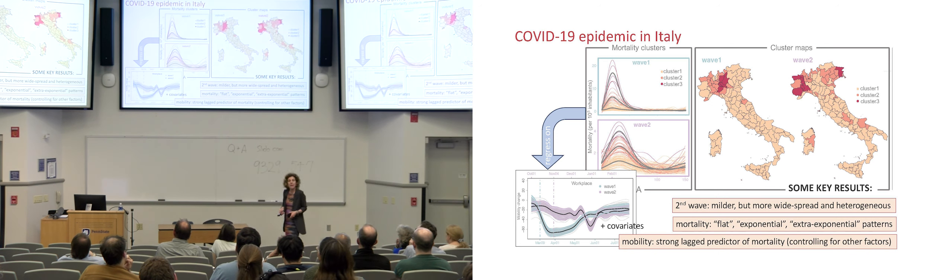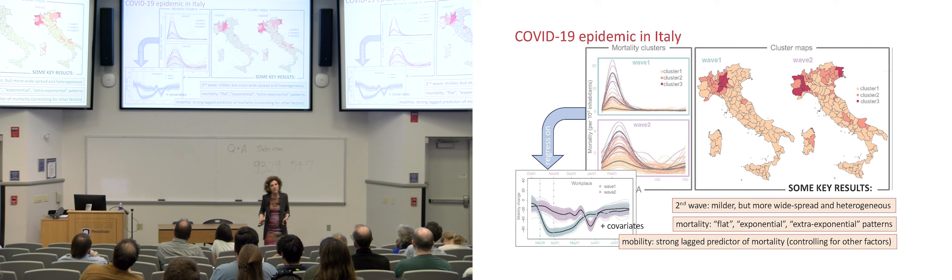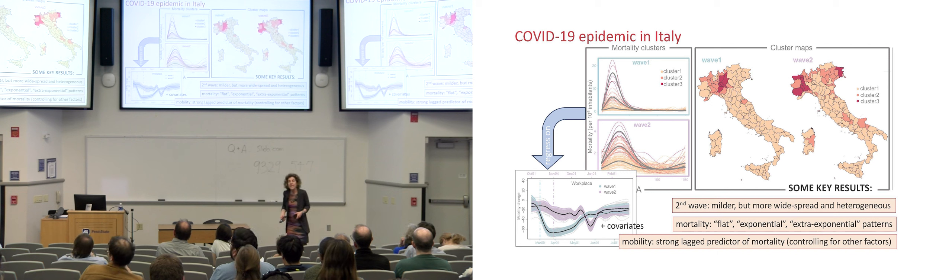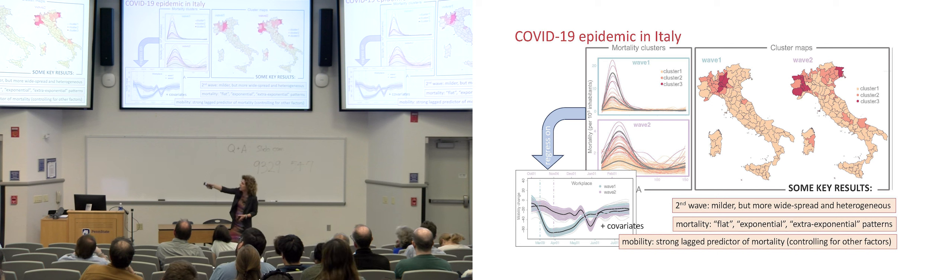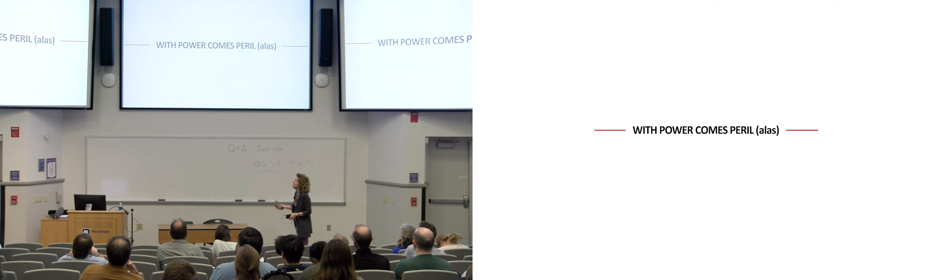And so, we ran a clustering type exercise, which allowed us to separate three different patterns. One that was almost flat, one that was clearly exponential, and one that was super exponential, if you want. And to locate these different patterns across the country and compare them between the two waves. And then, in addition to this clustering type exercise, we did a regression type exercise, in which we tried to study the mortality curve against the mobility curves and a bunch of other covariates. And we were able to find a consistent, strong signal that mobility was a lagged predictor of mortality in both waves.